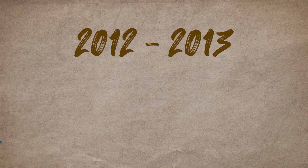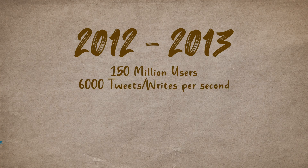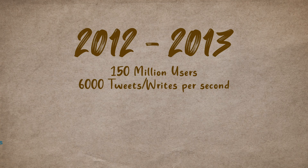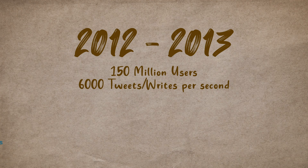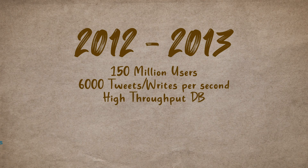About 10 years back, around 2012-2013, Twitter was growing exponentially and serving 150 million users. They were handling around 6,000 tweets per second from these users, and this was still manageable since databases with high throughput and write speeds were able to handle it.